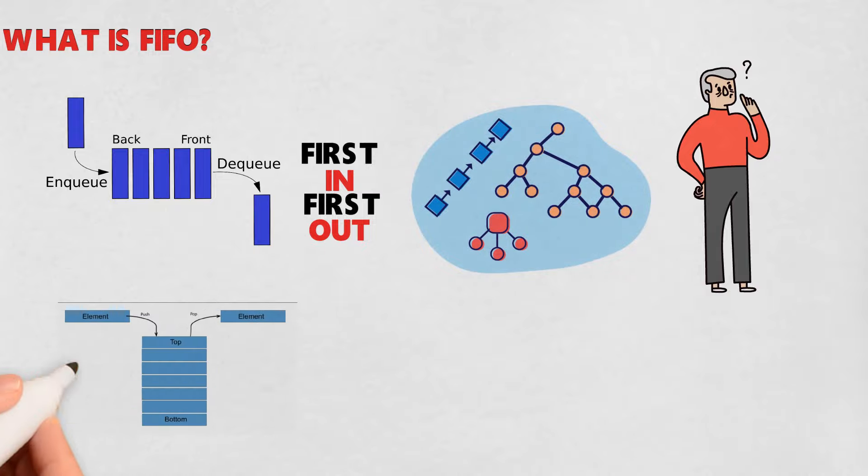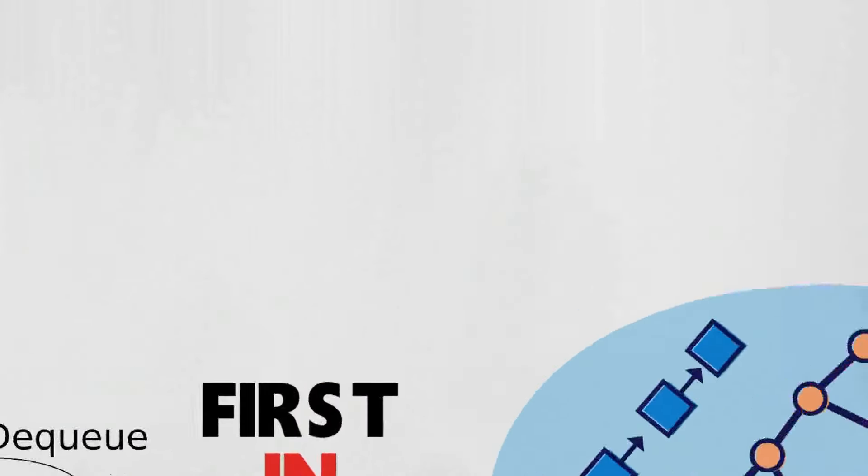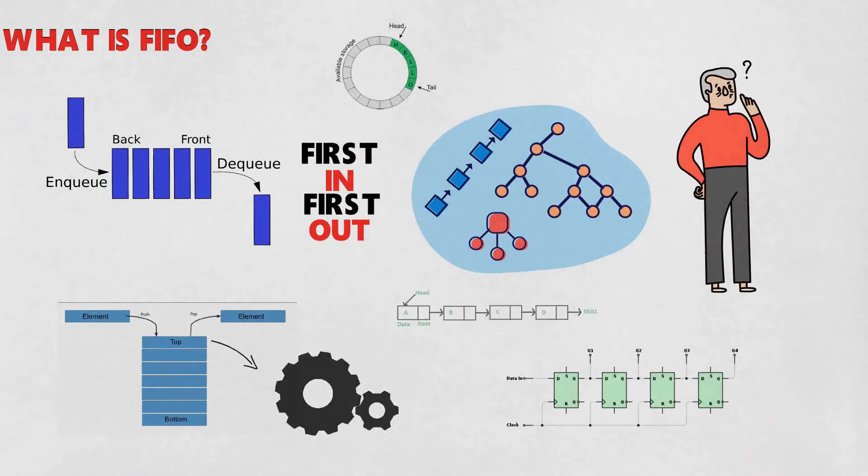Where the head of the queue is processed first. A FIFO could be implemented as a hardware shift register, typically a circular buffer or list.